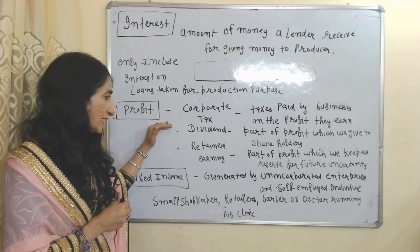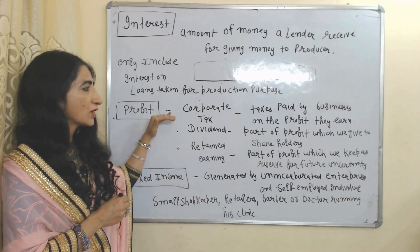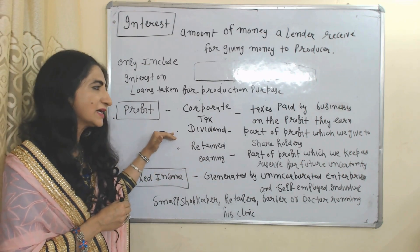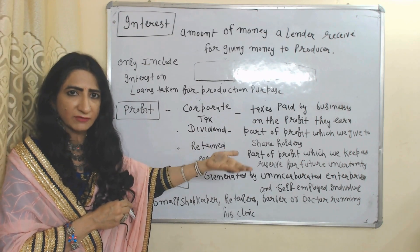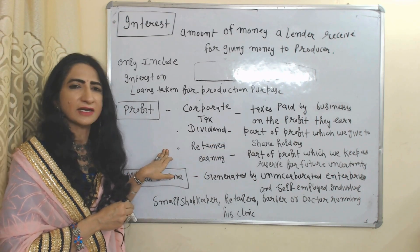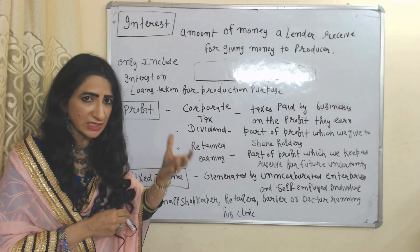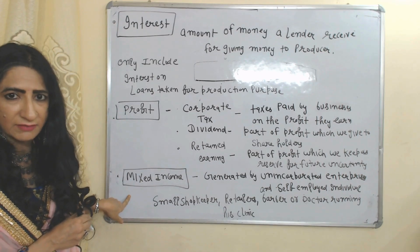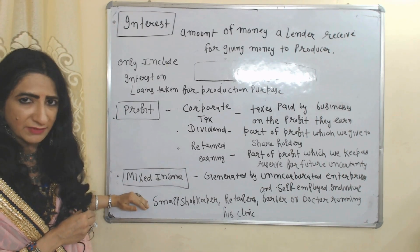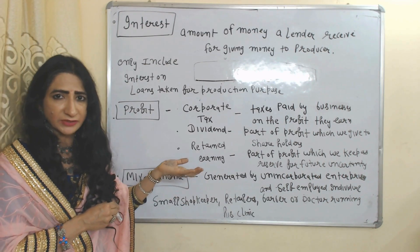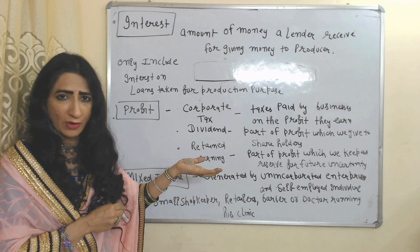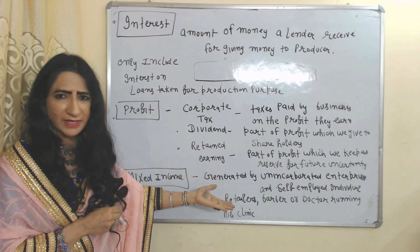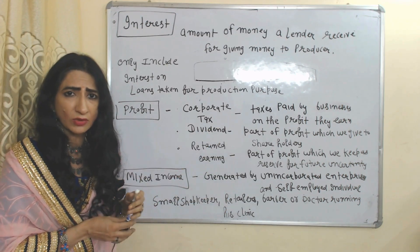The next component is profit. Profit mainly has three parts: corporate tax, dividend, and retained earnings. Corporate tax means tax paid by businesses on the profit they earn. Dividend means the part of profit given to shareholders. Retained earnings means the part of profit kept as a reserve for future uncertainty. The last component is mixed income, which is generated by unincorporated enterprises and self-employed individuals — for example, income earned by a small shopkeeper, retailer, barber, or a doctor running their own clinic.